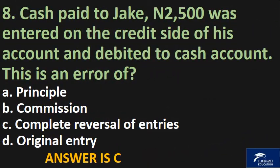Cash paid to Jake — 2,500 Naira was entered on the credit side of his account and debited to cash account. This is an error of: A. Principle, B. Commission, C. Complete reversal of entries, D. Original entry. The answer is C.